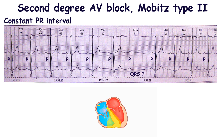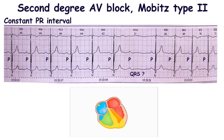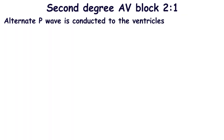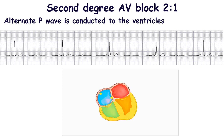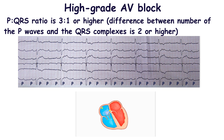In the case of second degree AV block Mobitz type 2, there are intermittent non-conducted P waves without progressive prolongation of the PR interval. The PR interval is constant. Sometimes P waves occur in complexes with a periodicity similar to second degree AV block Mobitz type 1. When only every alternate P wave is conducted to the ventricles, this state is called the second degree AV block with conduction 2 to 1. If the P to QRS ratio is 3 to 1 or higher — in other words, the difference between P waves and QRS complexes is 2 or more — this state is called high grade AV block.